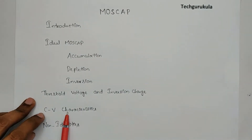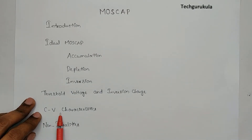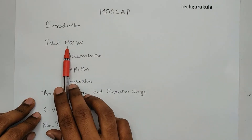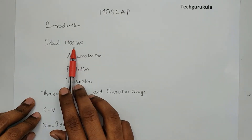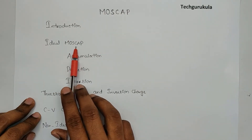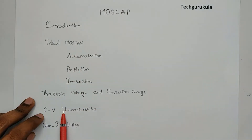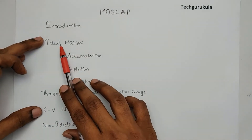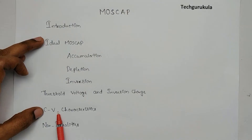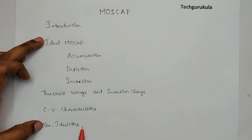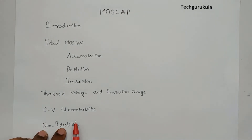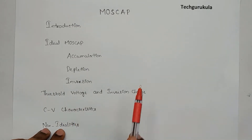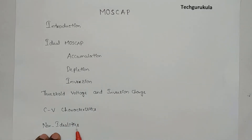We will then understand CV characteristics — capacitance-voltage characteristics — because the name itself indicates it's a MOS capacitor, so we have to understand the capacitance characteristics of the MOSCAP. By then we would have covered the ideal MOS thoroughly. After that, we will introduce the non-idealities, find out what happens to the threshold voltage, add flatband voltage, and see what happens to the CV characteristics because of the non-idealities.